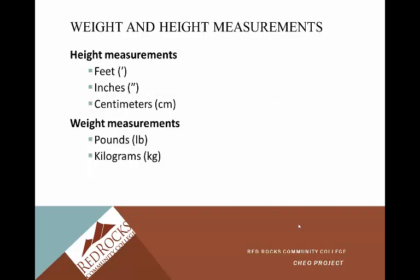Height measurements are done in feet and inches or centimeters — make sure you know what your facility wants you to document in. Weight measurements are recorded in pounds versus kilograms. If they want you to record in pounds, make sure you're putting 'pounds' behind the measurement so they know it's not a kilogram weight. Pounds are 2.2 times what the kilograms are, so it's important that the health care provider knows the specific measurements and what unit they're in.